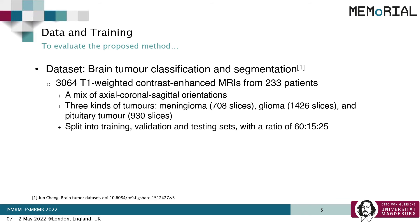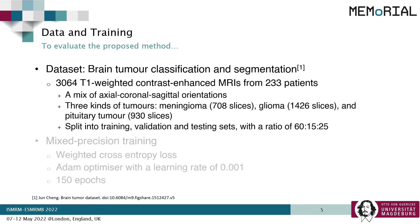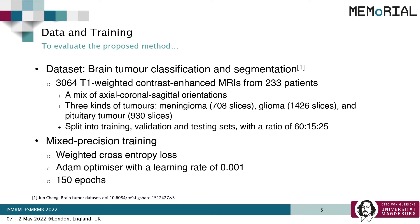To evaluate our approach, we have used a brain tumor dataset comprising 3064 T1-weighted contrast-enhanced MRIs from 233 patients. This dataset contains a mix of three orientations and includes three different types of tumors. The dataset was split into training, validation, and test sets with a ratio of 60, 15, and 25. Mixed precision training was performed using the weighted cross-entropy loss, which also addresses the data imbalance problem, and it was optimized using the ADAM optimizer with a learning rate of 0.001 for 150 epochs.